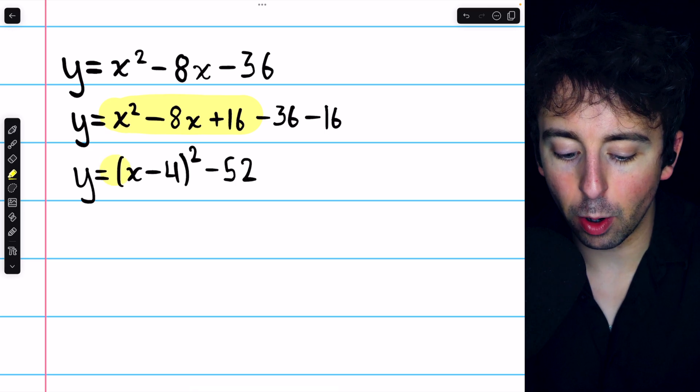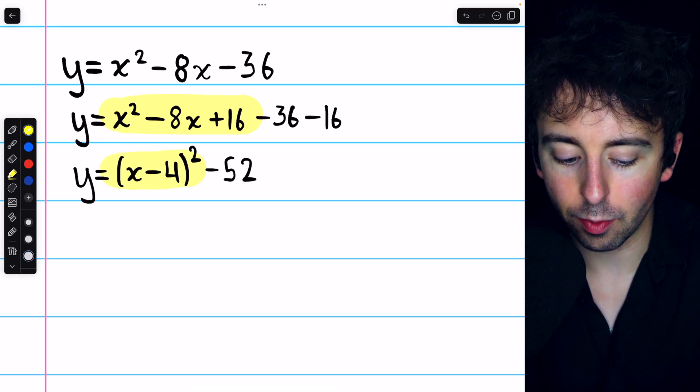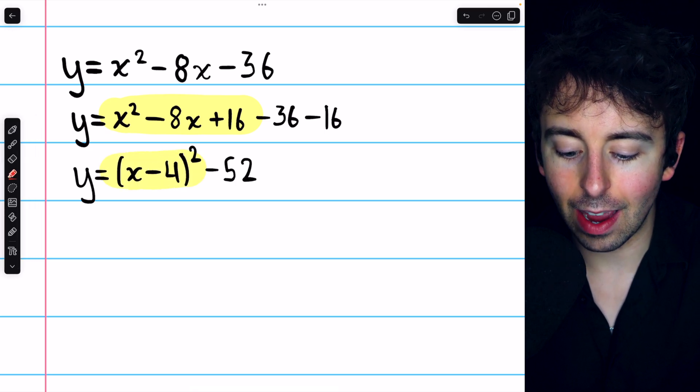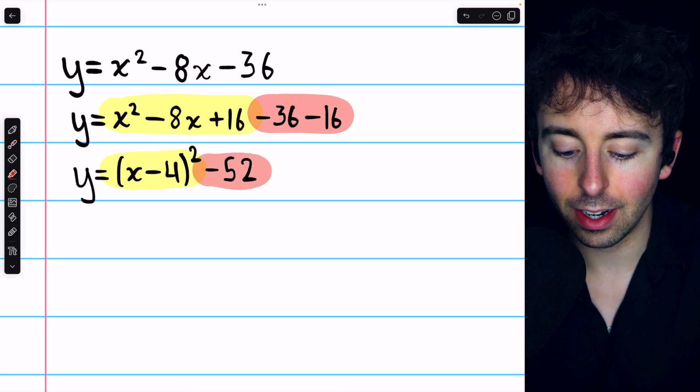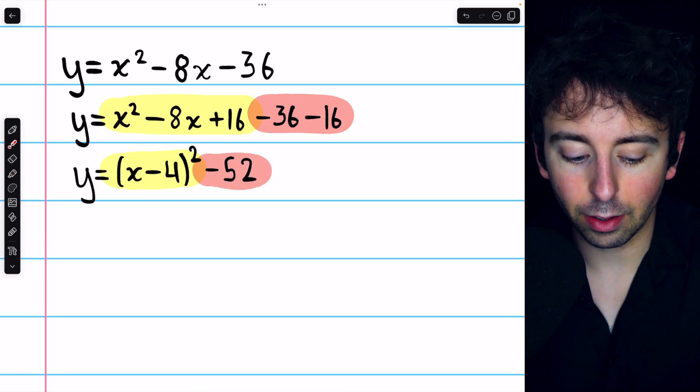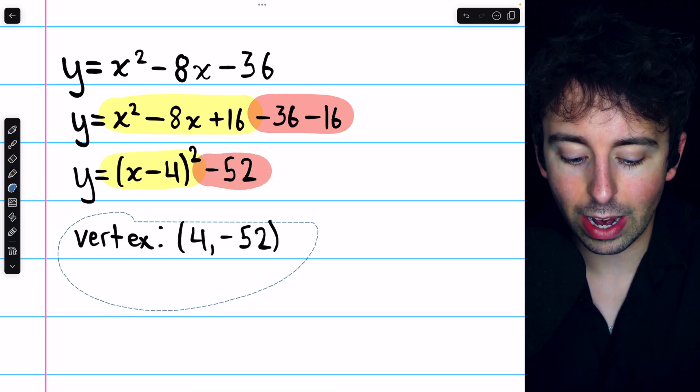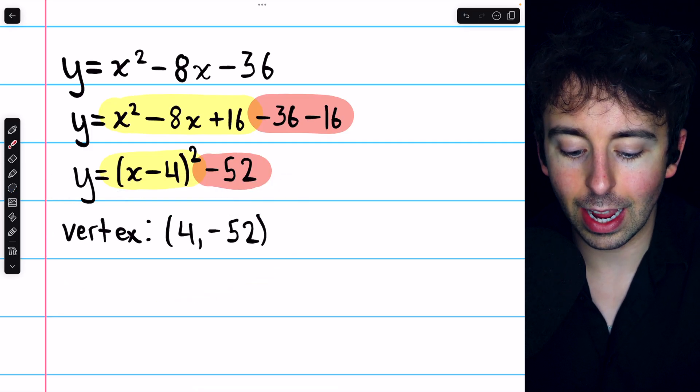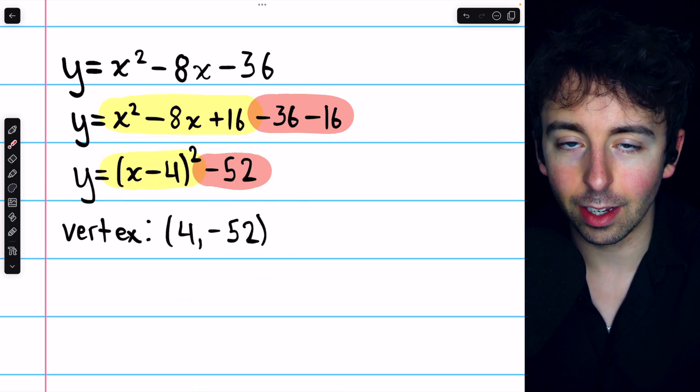minus 36 minus 16 is minus 52. So again, we added 16 to create that perfect square trinomial, and then factored it, and then we just still have these constants outside. And that's it. This is vertex form. So directly from this equation, we can identify the vertex is 4, negative 52.